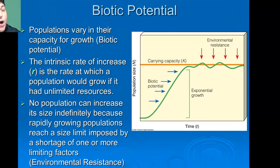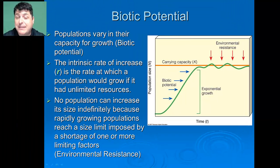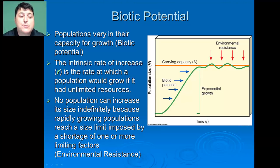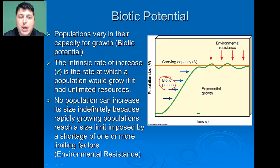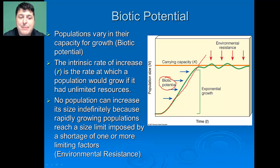All populations vary in their capacity for growth. This capacity for growth is referred to as biotic potential. The intrinsic rate of increase is the rate at which a population would grow if it had unlimited resources — how fast that population would increase over time with unlimited resources available to them.